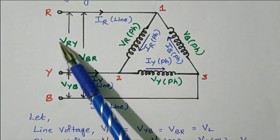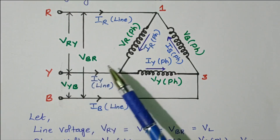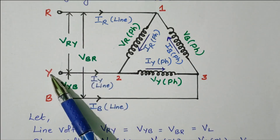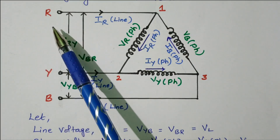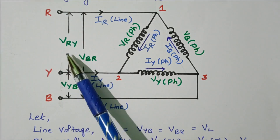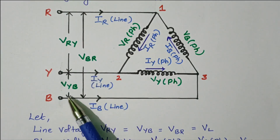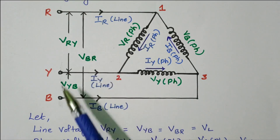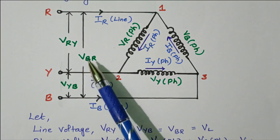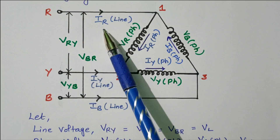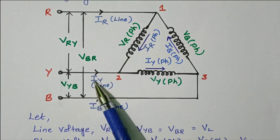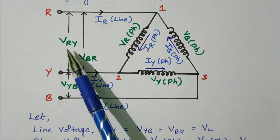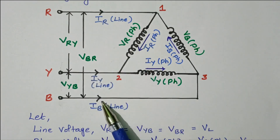This is called the line voltage or line current. At this end, this is called the phase voltage or phase current. The voltage across R and Y phase is VRY. The voltage across Y and B phase is VYB — this is called line voltage. The voltage across R and B is VBR, also line voltage. The current flowing through R phase is IR line, Y phase is IY line, B phase is IB line. These are all the line voltages and line currents.